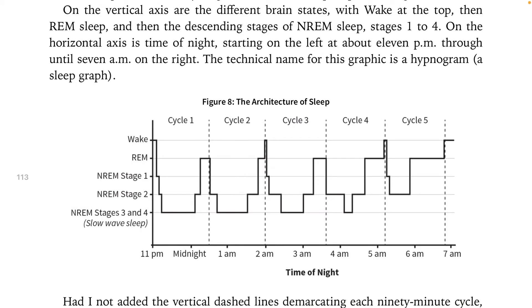On the vertical axis are the different brain states, with wake at the top, then REM sleep, and then the descending stages of NREM sleep, stages 1 to 4. On the horizontal axis is time of night, starting on the left at about 11 p.m. through until 7 a.m. on the right. The technical name for this graphic is a hypnogram — a sleep graph. Figure 8: The architecture of sleep.